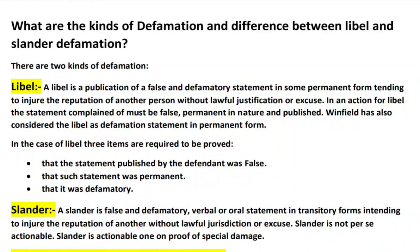What is the difference between defamation and libel and slander? There are two kinds of defamation. The first kind is libel. A libel is a publication of a false and defamatory statement in some permanent form, tending to injure the reputation of another person without lawful justification or excuse. In an action for libel, the statement complained of must be false, permanent in nature, and published. Winfield also considered libel as a defamatory statement in permanent form.